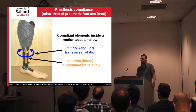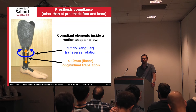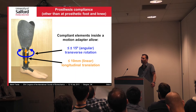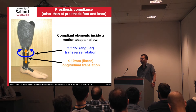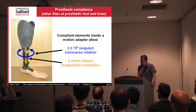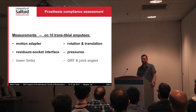Longitudinal translation is a little bit like a pogo stick effect — it allows about 10 millimeters of compression. The reason some amputees have a motion adapter is the transverse rotation aspect, which you can also have to some extent in prosthetic feet but only very little. The transverse rotation is supposed to allow the socket to track motion in the transverse plane of the residual, and the longitudinal translation is there to provide some degree of shock absorption. However, very little work has been done to establish what is going on with motion adapters and their effect on gait.